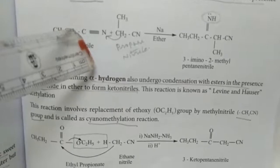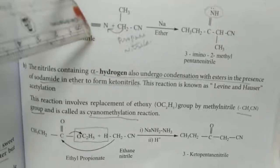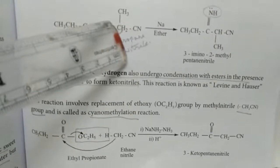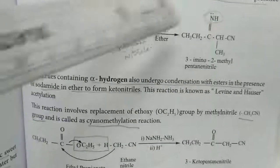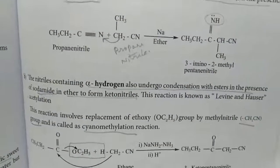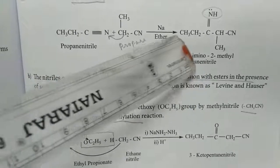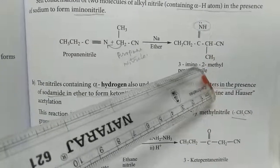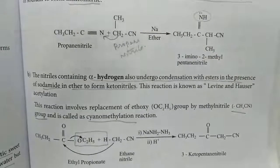After the alpha-hydrogen transfer, the CH3 becomes CH2, and we get an NH group with a C=C double bond forming in the product. The product contains a nitrile group. The name of this product is 3-amino-2-ethylpentanenitrile, with 5 carbon atoms in the longest chain.